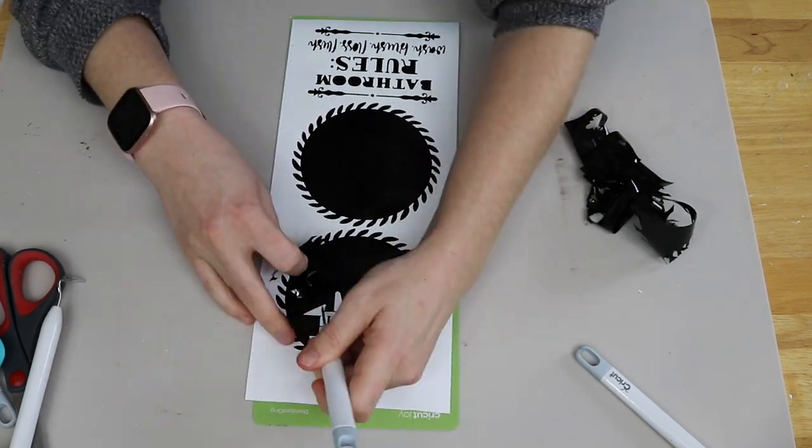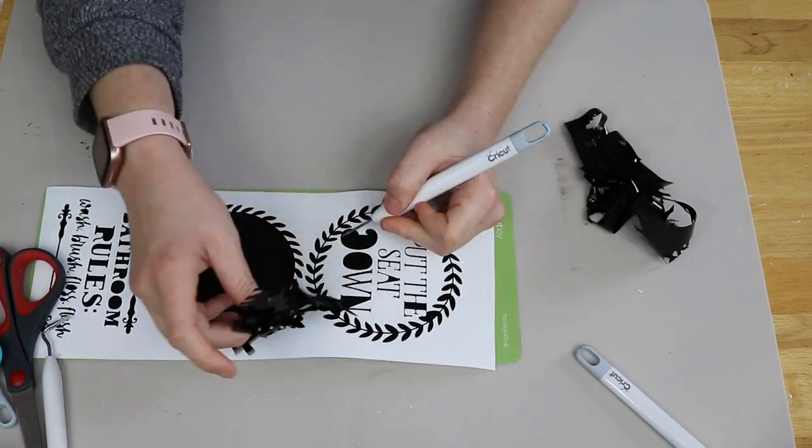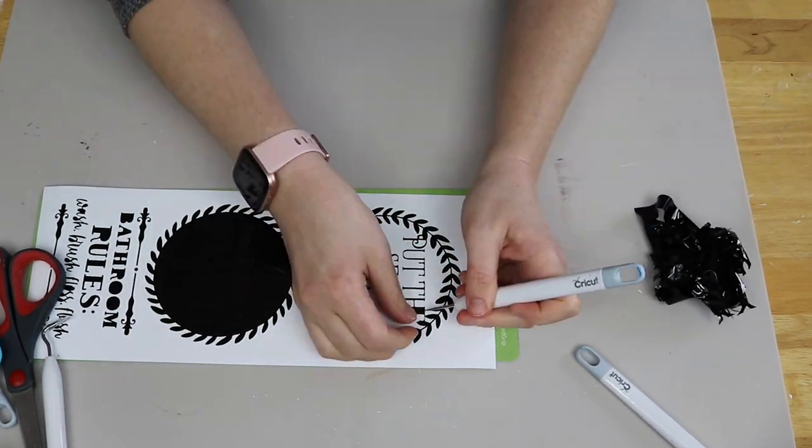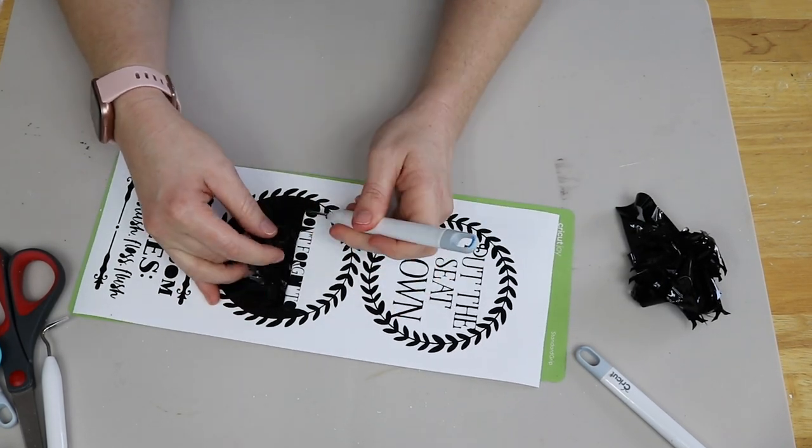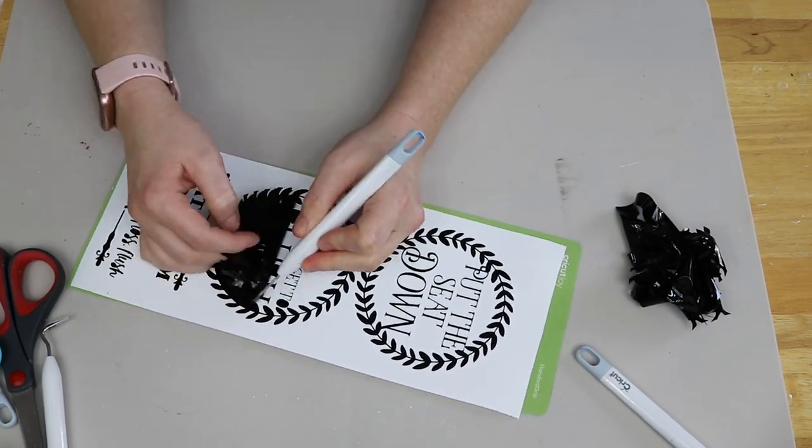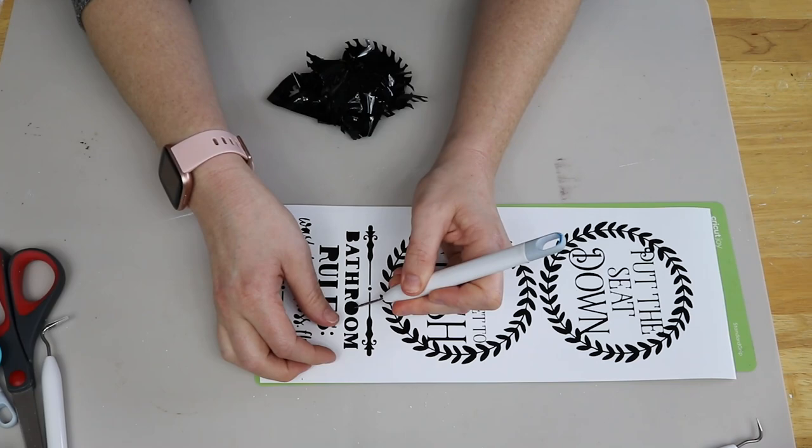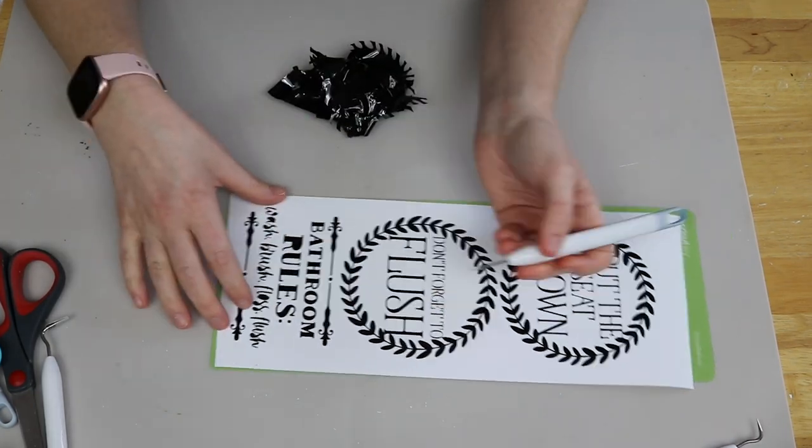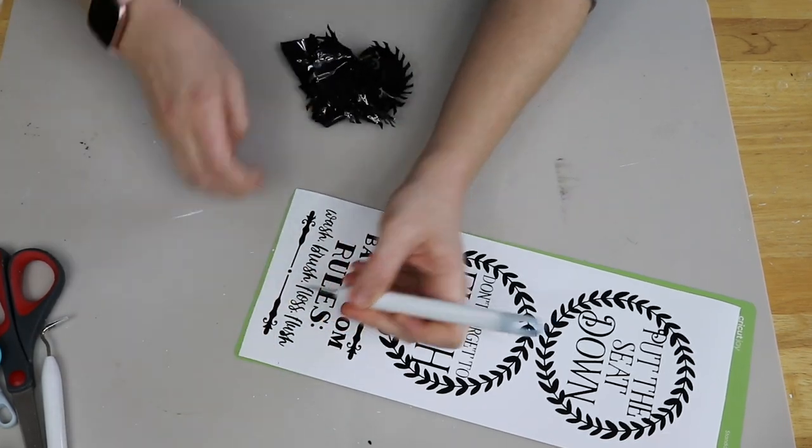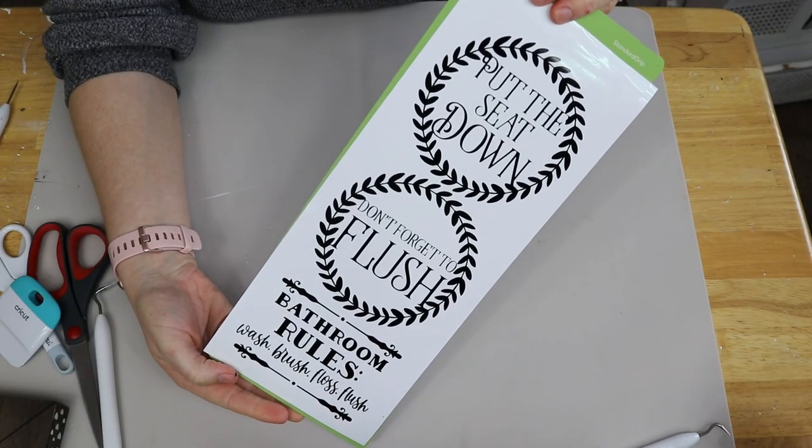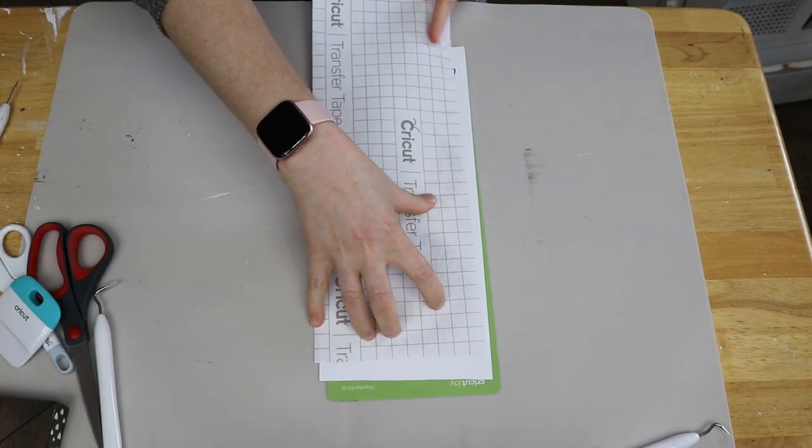Once I have the backgrounds removed from those images I'm just going to take my weeding tool again and I'm weeding out the middle of the images this time and I'm going to be weeding out the middle of the letters, the middle of the D and the O and just wherever we don't need that vinyl. But honestly it's not a super big deal because if you do transfer it to your project on accident you can still take your weeding tool and just remove all the unnecessary or unwanted things on there.